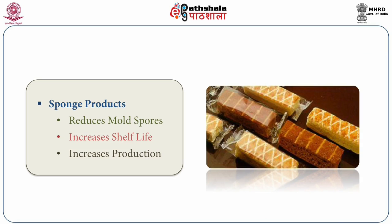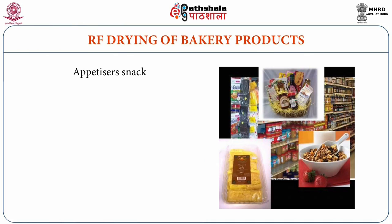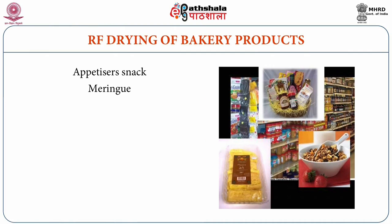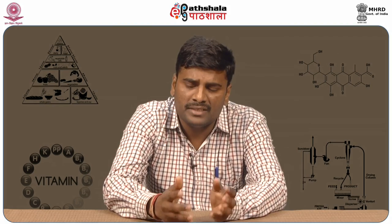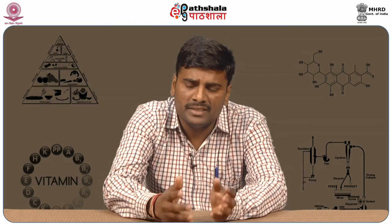For sponge products like bread and cakes, microwave heating reduces mold spores and increases shelf life, also increasing production output. Radio frequency drying of bakery products is generally used for appetizer snacks, margarines, puff pastry, breakfast cereals, bread croutons, sponge products, frizzles, shortbread, and even drying of pasta vermicelli. You can sterilize or cook these products just as you would with a conventional heating system using microwave heating.